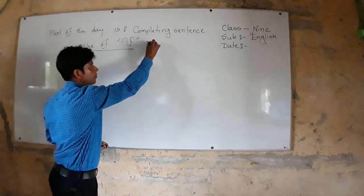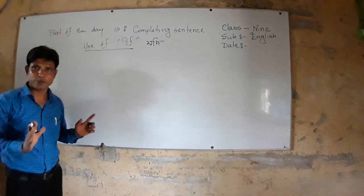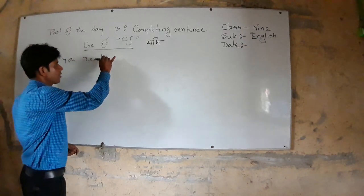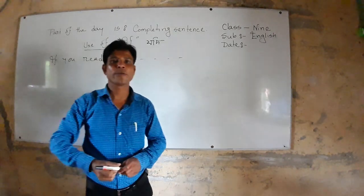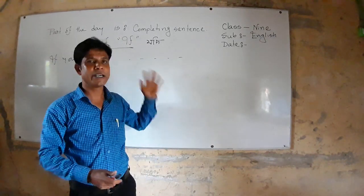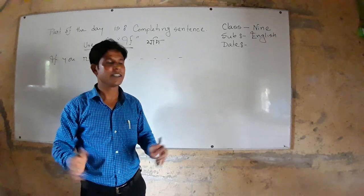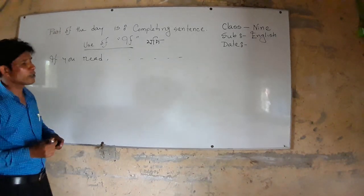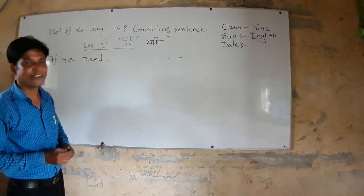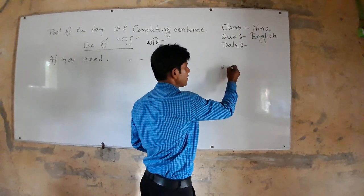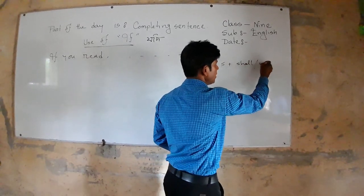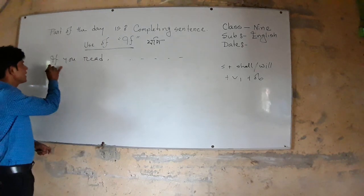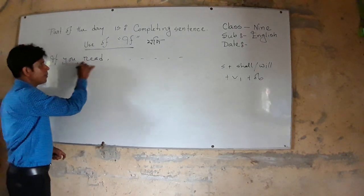If means Jodi. In this sentence, the structure is: if you subject, shall will, plus verb one, plus object. The sentence is subject, verb, object.